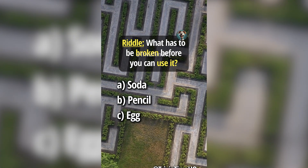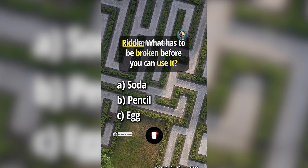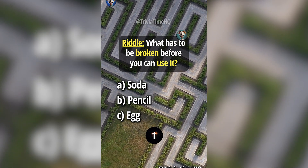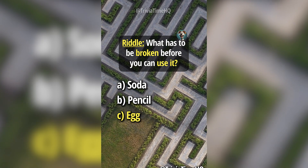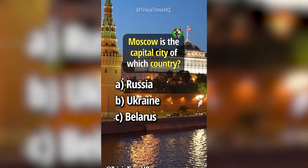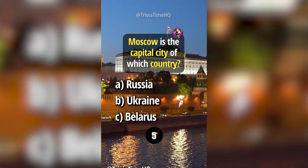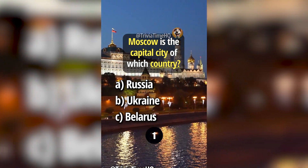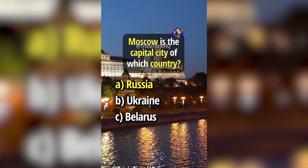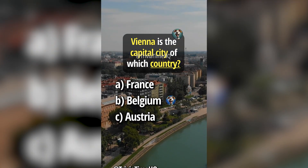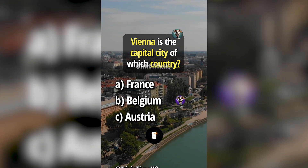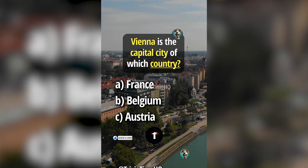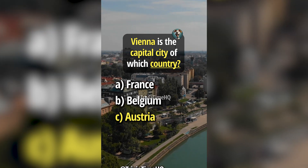Riddle: what has to be broken before you can use it? Answer C, egg. Moscow is the capital city of which country? Answer A, Russia. Vienna is the capital city of which country? Answer C, Austria.